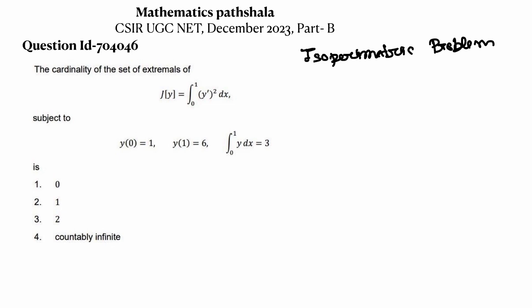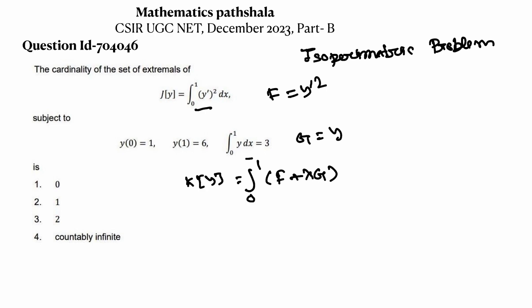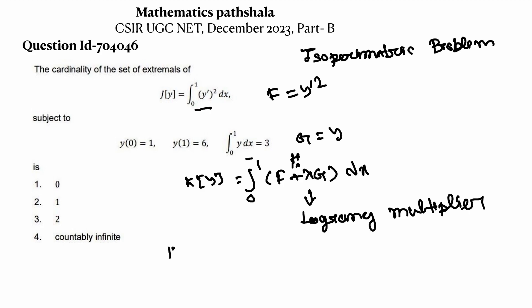To solve this problem, let f equal to y-dash squared and z equal to y. We have to find the extremal of K[y], where K[y] equals the integral from 0 to 1 of f plus lambda times z dx, where lambda is the Lagrange multiplier. Let h equal to f plus lambda z, so h becomes y-dash squared plus lambda times y.